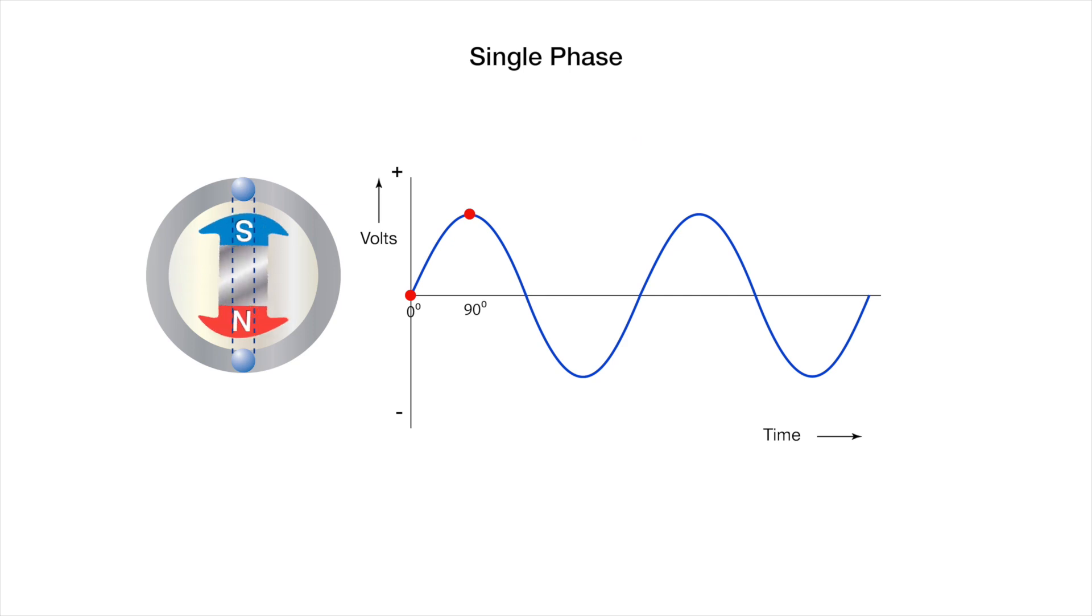After rotating 180 degrees, the magnetic field is again parallel to the wire coils, with zero EMF induced. Rotating to 270 degrees, crossing the wires in the other direction, maximum negative EMF is produced.